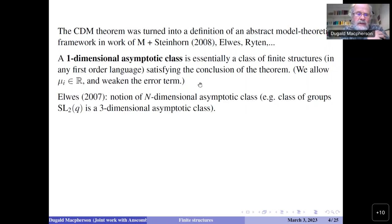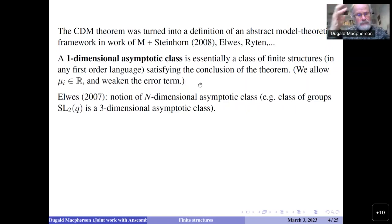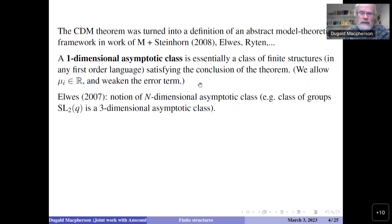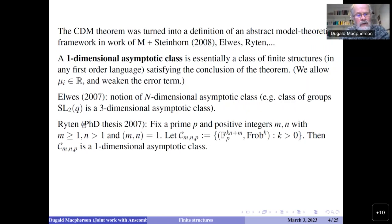For example, the collection of groups SL2(q) — two-by-two determinant-one matrices over the field of q elements — ought to be something like an asymptotic class, but it's naturally three-dimensional: four entries in a two-by-two matrix with the determinant-one equation gives three degrees of freedom. Elwes gave a definition of an n-dimensional asymptotic class that picks up things like this. Mark Wrighton then found a nice example of a one-dimensional asymptotic class which is a proper expansion of finite fields — an extension of the Chatzidakis–van den Dries–MacIntyre theorem.